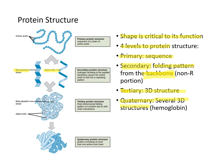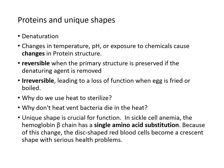Quaternary structure involves combining several three-dimensional structures together. Hemoglobin is an example of a quaternary protein structure, containing multiple polypeptide chain subunits arranged in unique shapes.